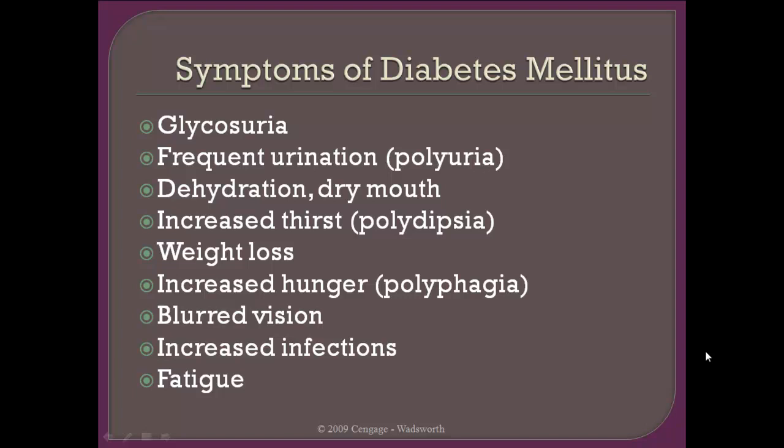Some symptoms of diabetes include glucosuria — which just means glucose in the urine. A normal functioning kidney won't allow glucose into the urine, but when levels are very high that does happen. More often than not we see a person gaining very significant amounts of weight in the early stages of diabetes. Other symptoms include increased hunger or polyphagia, blurred vision, increased infections, and fatigue.